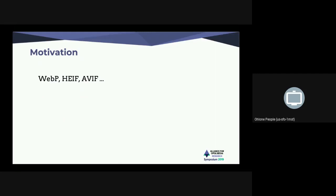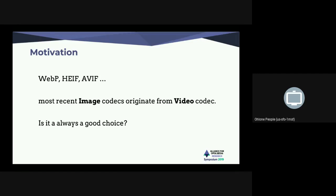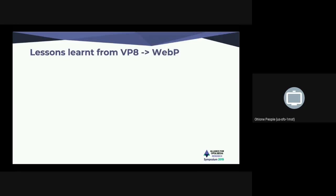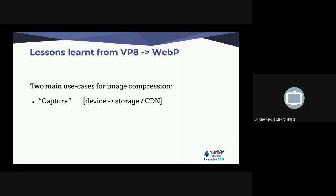I'm going to go fast on the first part and spend more time on research directions and what we propose for a better image format from what we learned from WebP v1. If you look at the image formats we talked about, most of them are based on video codecs: VP8 for WebP, HEVC for HEIF, AV1 for AVIF. So is it always a good choice? Do we always have the right set of tools when we take a video codec and try to make it into an image codec? Some of them are good, but some tools are not really fit for an image application.